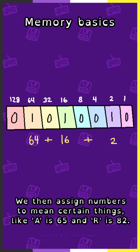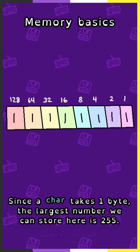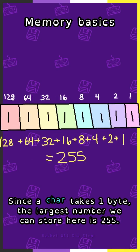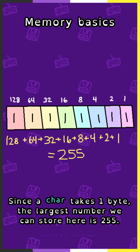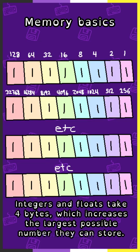We then assign numbers to mean certain things, like capital A is 65 and capital R is 82. Since a character takes 1 byte, the largest number we can store here is 255. Integers and floats take 4 bytes, which increases the largest possible number they can store.